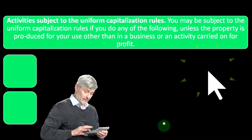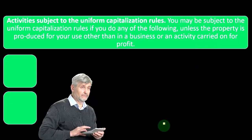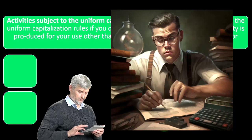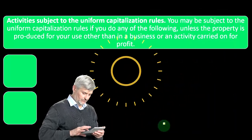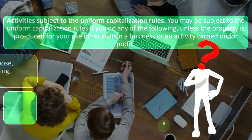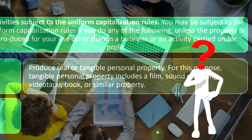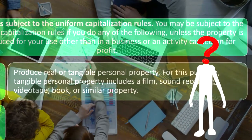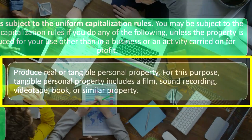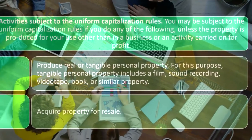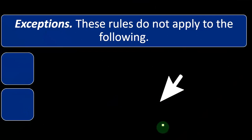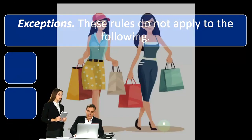Activities subject to the uniform capitalization rules: you may be subject to these rules if you do any of the following, unless the property is produced for your own use other than in a business or activity carried on for profit. These include: produce real or tangible personal property — which includes a film, sound recording, videotape, book, or similar property — or acquire property for resale, which is typically an inventory situation where you bought it to resell it.